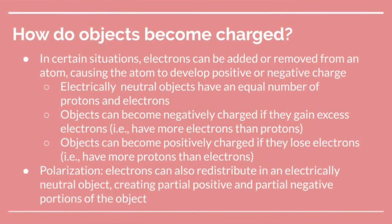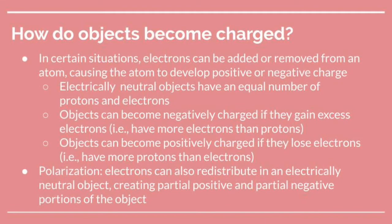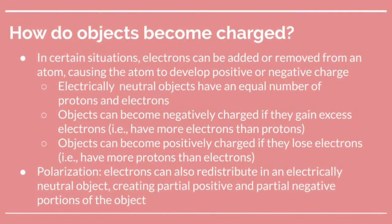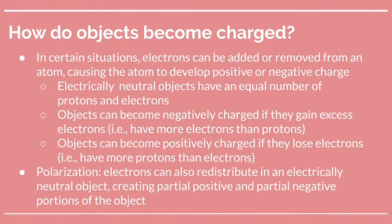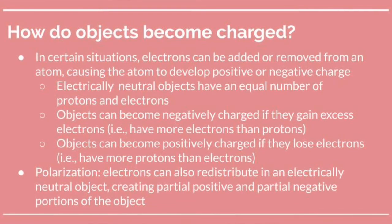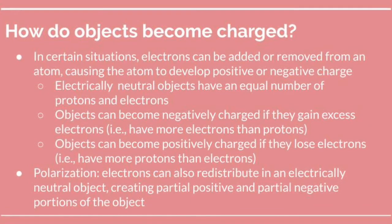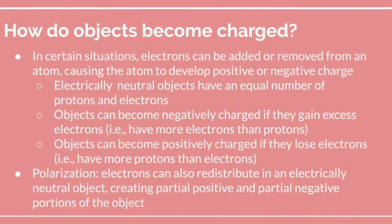Electrically neutral objects have an equal number of protons and electrons, so their charge is balanced. Objects can become negatively charged if they gain excess electrons — if you have more electrons than protons, that gives you a net negative charge. Objects can become positively charged if they lose electrons, leaving them with more protons than electrons.